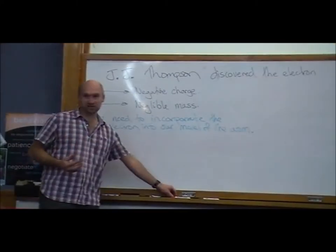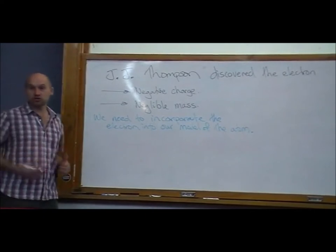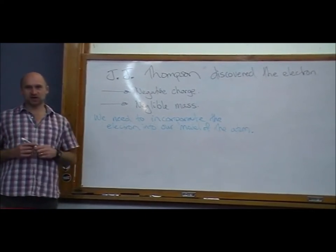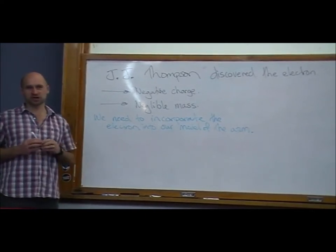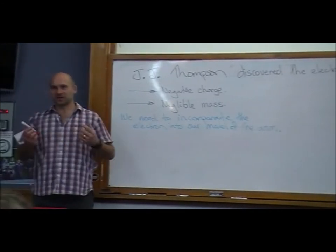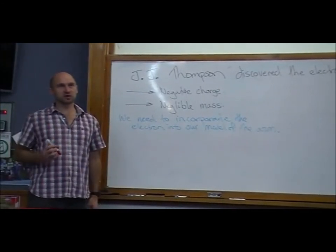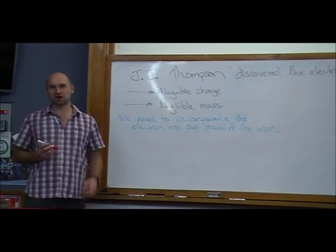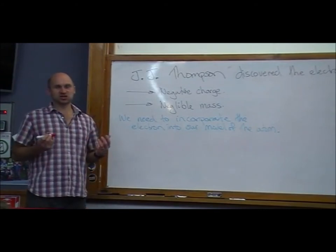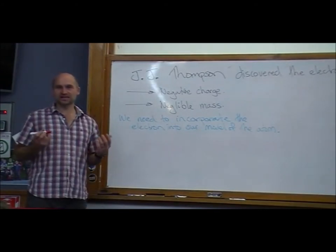And the way that J.J. Thompson dealt with this, he came up with a new model of the atom that he called the plum pudding model of the atom. But plum pudding, we've got to think back to the 1890s, what did plum pudding mean? It was kind of like a sultana bun, a raisin bun.